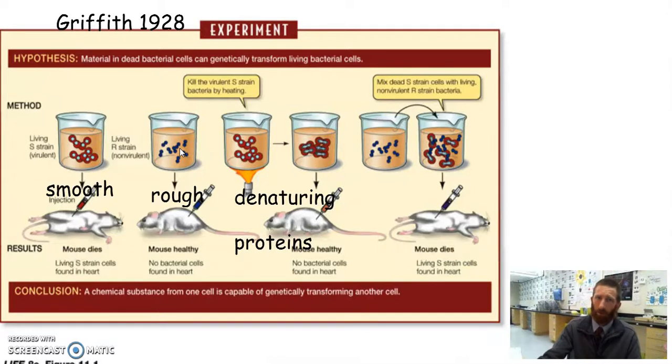So he called it his transforming factor. He didn't know what the transforming factor was. He was just like, Hey, this happened. So there must be some kind of chemical non-living transforming factor that controls cells. That was the very first experiment that hinted at this chemical that we now know today as DNA. So this has been Mr. Leo today.